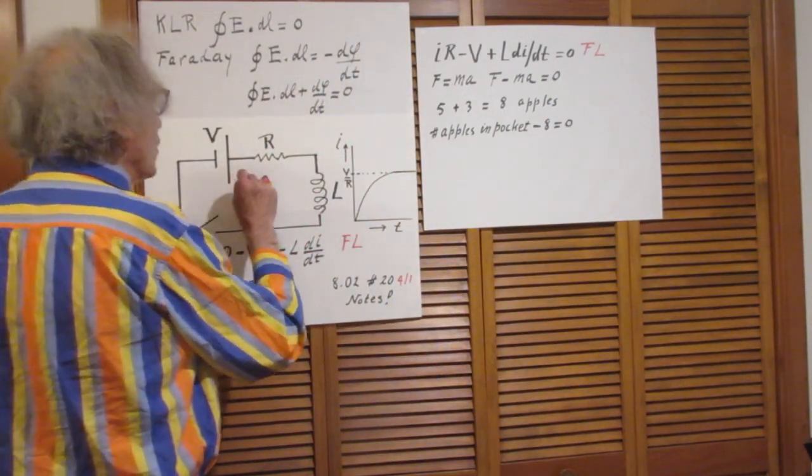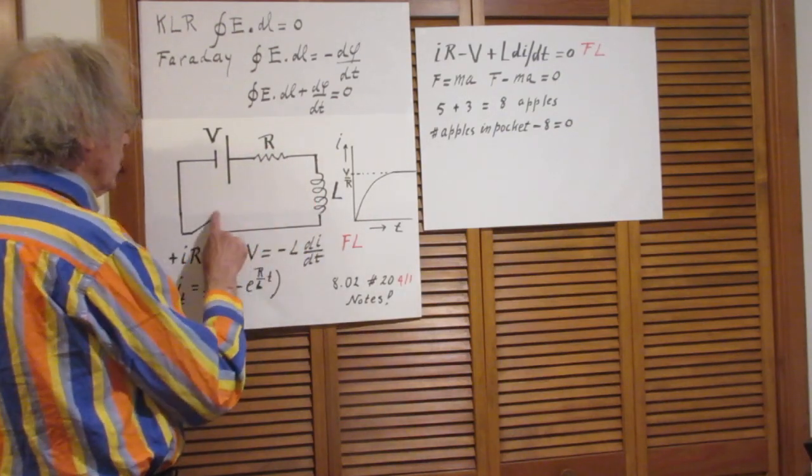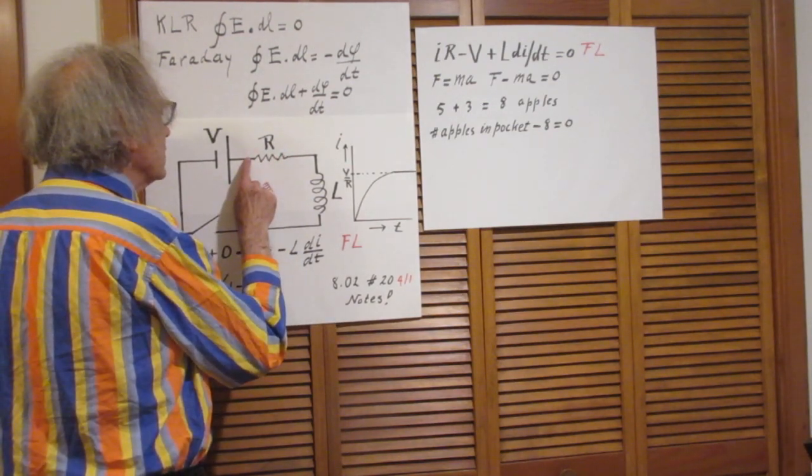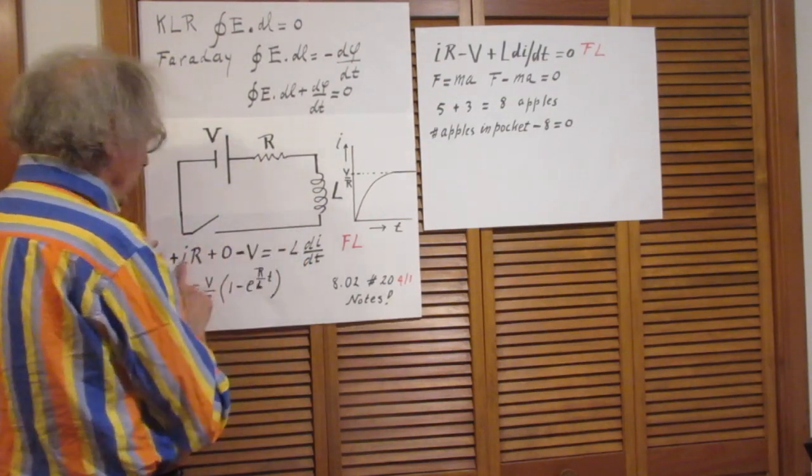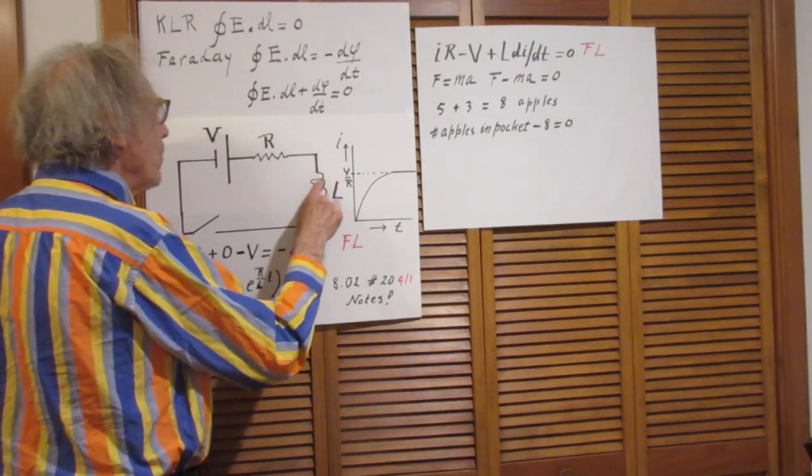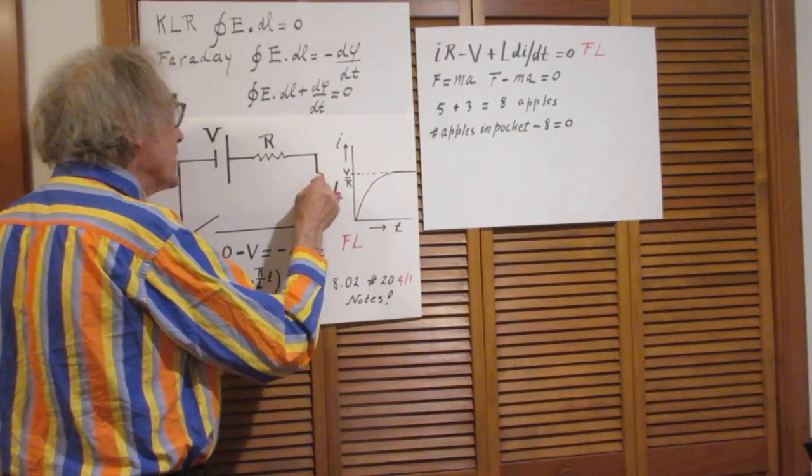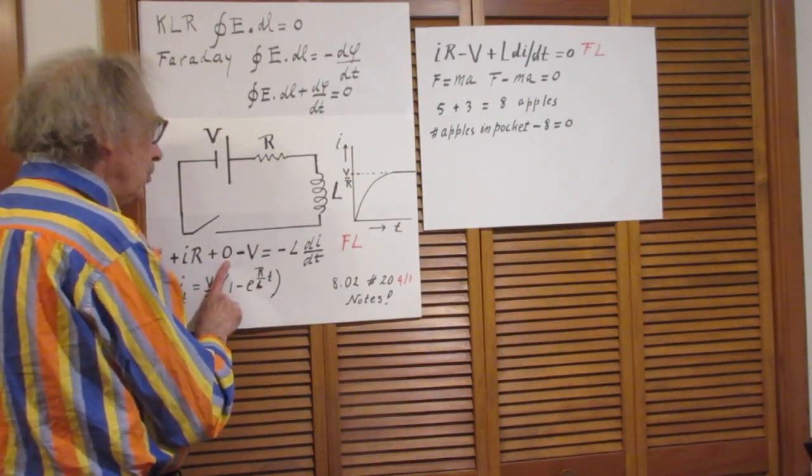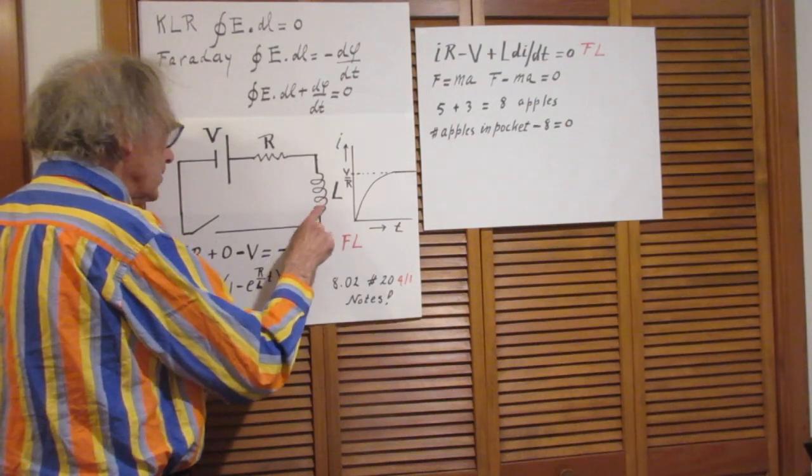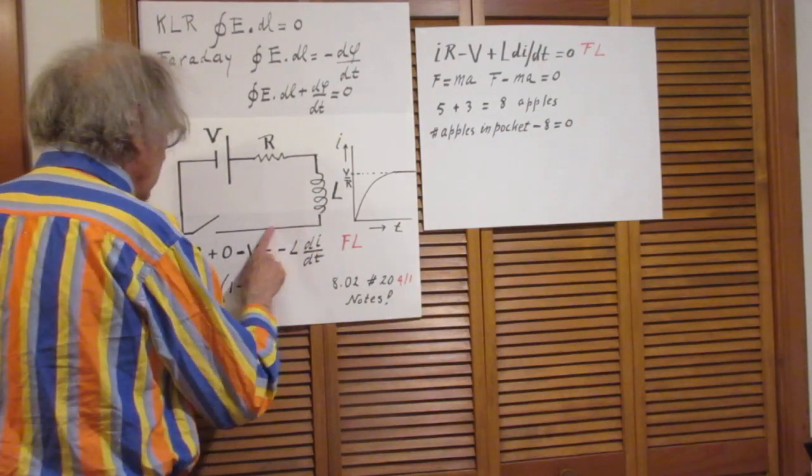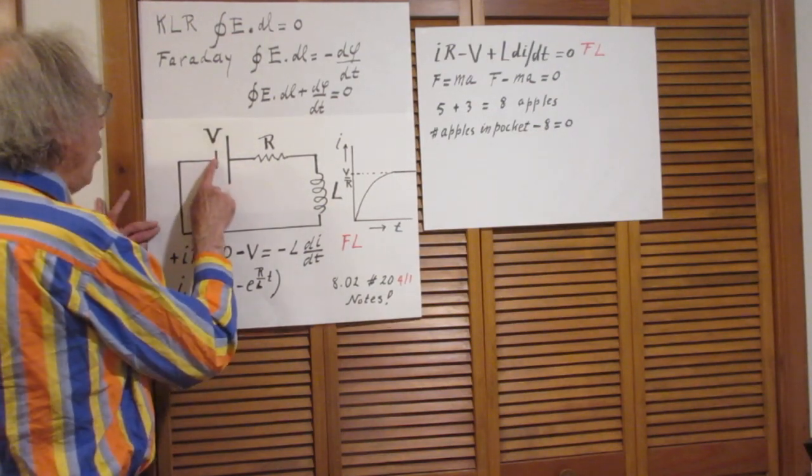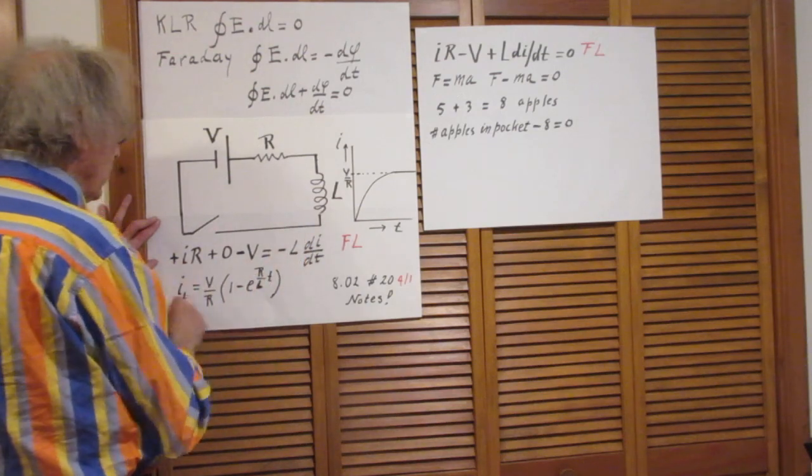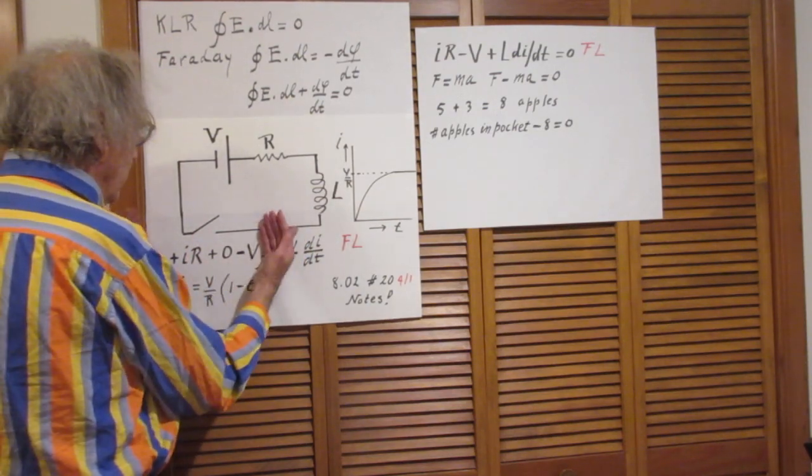Let's start here. Closed loop integral of E dot DL around this circuit. The switch is closed. Current I at one moment in time is I. So the potential difference from here to there, which is the integral E dot DL from here to there, is plus IR. Now I come to the wires of the self-inductor and I go inside the wires. Not outside but inside the wires. They have no resistance. So it's zero. The integral E dot DL going through the wires of this ideal self-inductor is zero. These lines have also zero resistance. I come here at this point has a lower potential than that one. The difference is V. So it is minus V. So the closed loop integral of this circuit is IR minus V.